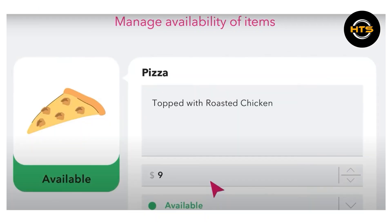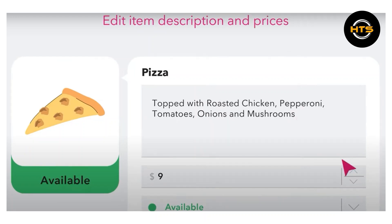Managing the availability of items is also straightforward. If you're out of stock or temporarily not offering a particular dish, you can easily mark it as unavailable. This ensures that customers won't be able to order items that you're unable to provide.